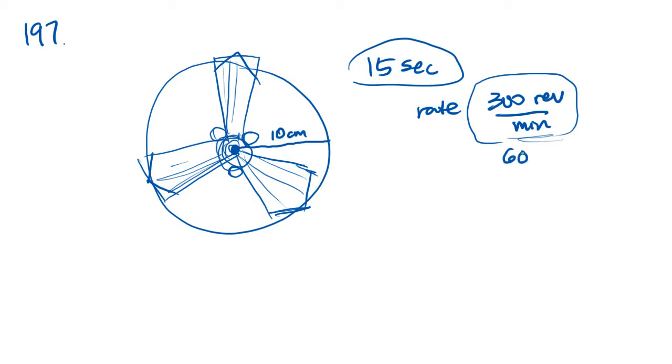Well, since we're looking for 15 seconds, we need to convert this rate into 15 seconds. A minute is going to be 60 seconds, and that goes into 15 seconds four times. So 15 seconds, the rate would be 300 divided by four, which is 75 revolutions per 15 seconds.